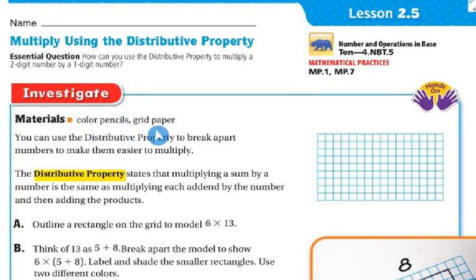We're going to use colored pencils and grid paper. So there's our grid paper. You can use the distributive property to break apart numbers to make them easier to multiply. So what is the distributive property? The distributive property states that multiplying a sum by a number is the same as multiplying each addend by the number and then adding the products together.